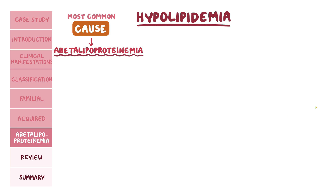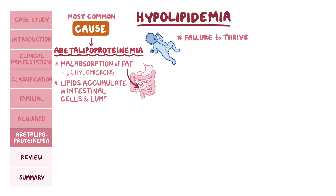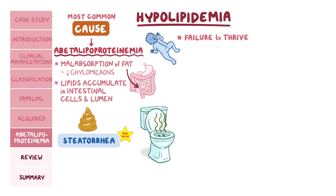Abetalipoproteinemia presents early in infancy. A key symptom is malabsorption of fat in the small intestine due to low levels of chylomicrons, so infants don't grow properly, a condition called failure to thrive. In addition, the lipids accumulate inside intestinal cells and the intestinal lumen, resulting in diarrhea that contains large amounts of fat, also called steatorrhea. On the exam, a clue towards steatorrhea would be malodorous stools that float in the toilet bowl and are difficult to flush down.